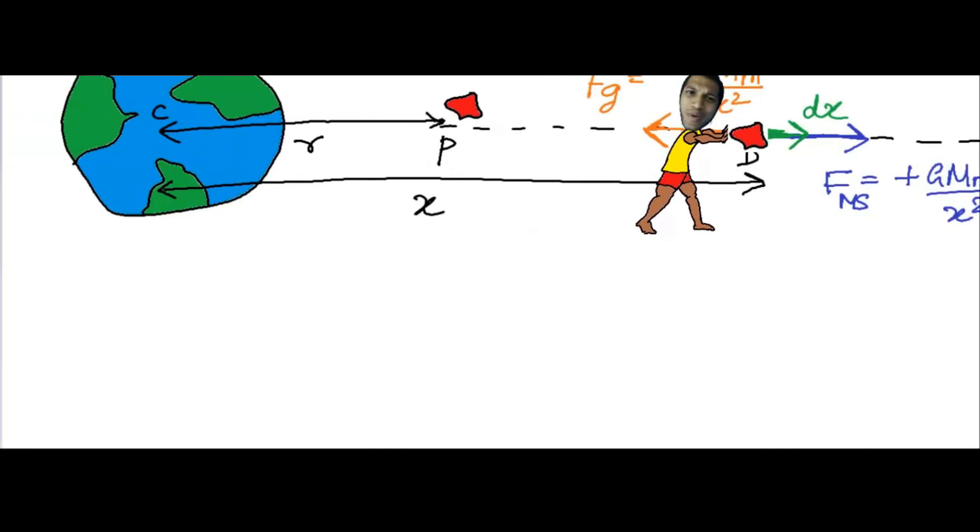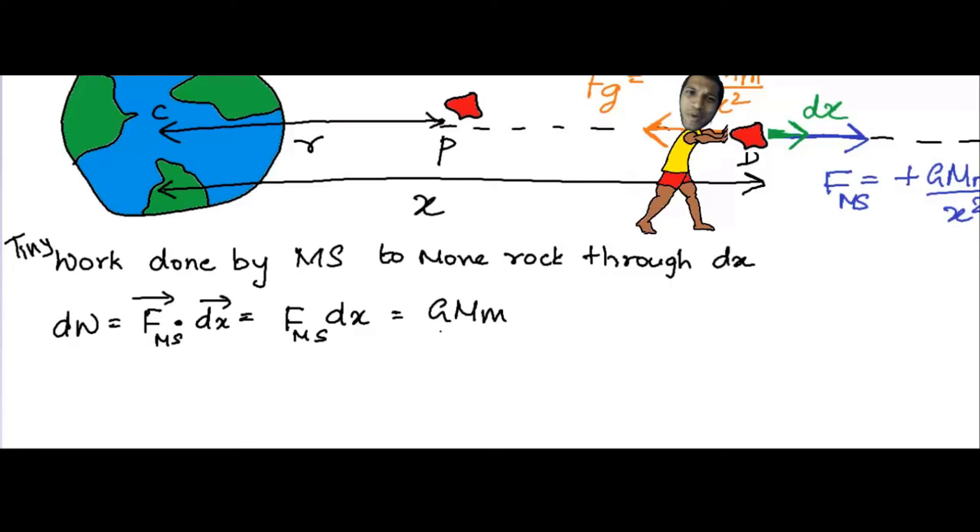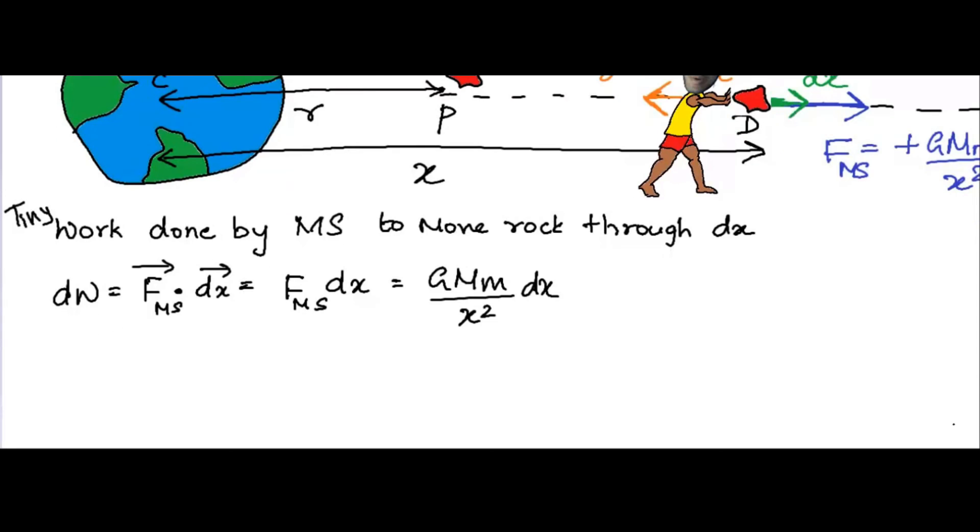Now the tiny work that I have done in taking that stone through dx is my force dot dx. My force is positive, dx is positive, and the angle is zero, making cosine zero equal to one.